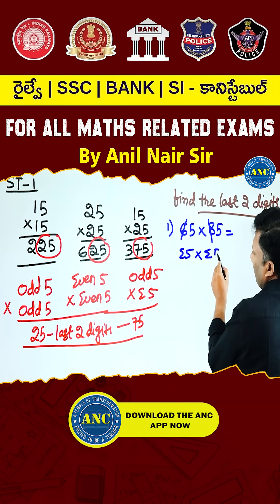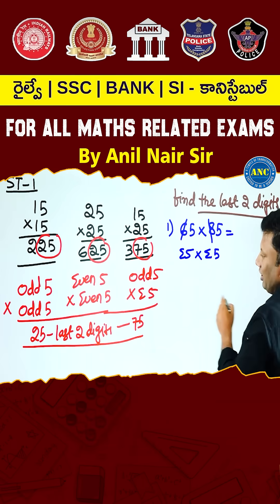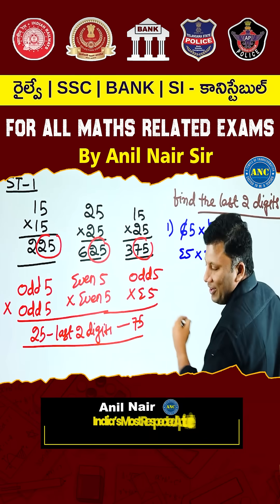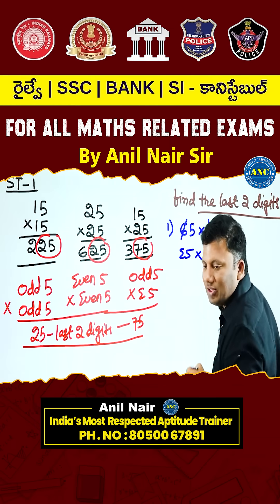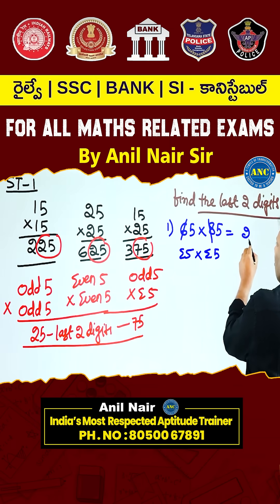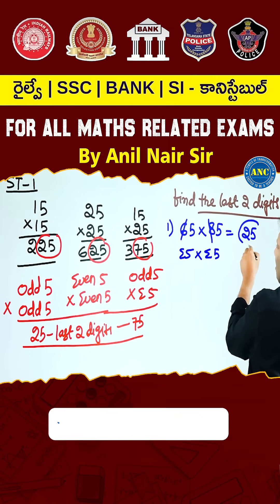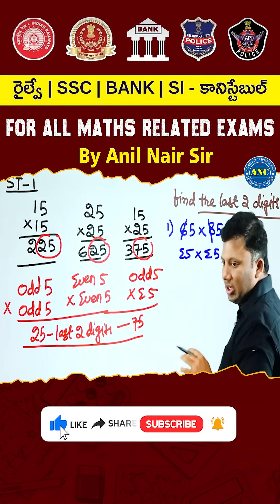80 is an even number. Even 5 into even 5 — what is even 5 into even 5 last two digits? 25. The answer for this question is 25.